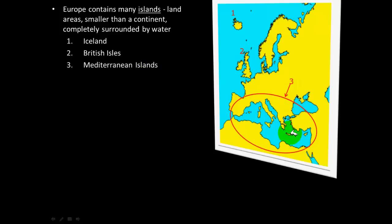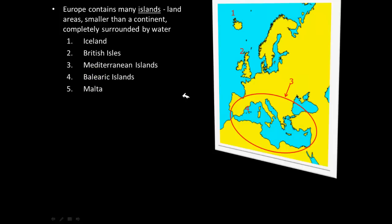The Mediterranean Islands are all the islands located in the Mediterranean Sea. Students will not be tested on all of them individually, but should know the term. The Balearic Islands are small islands to the east of Spain. Sicily is the part of the map that appears Italy is 'kicking' with its boot shape. Malta is a group of small islands just to the south of Sicily and is not shown on all maps.